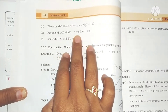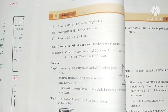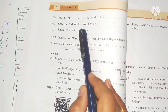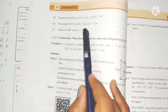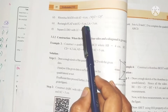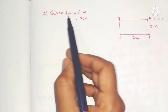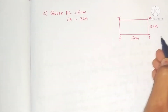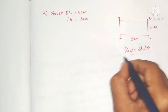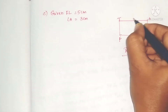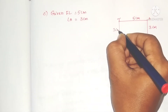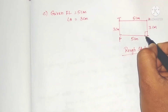Next problem: construct rectangle FLAT with FL equals 5 centimeters and LA equals 3 centimeters. In a rectangle, all angles are right angles (90 degrees) and opposite sides are equal. So AT is also 5 centimeters and the opposite side to LA is also 3 centimeters.